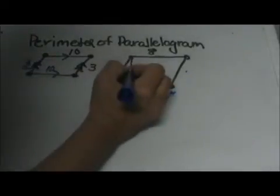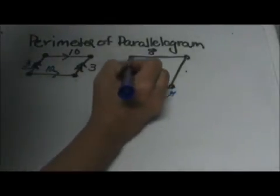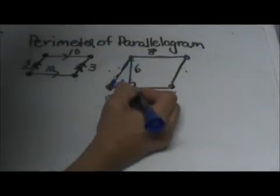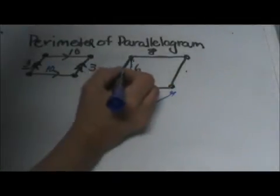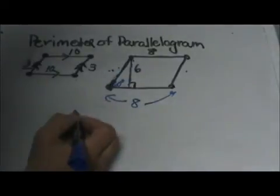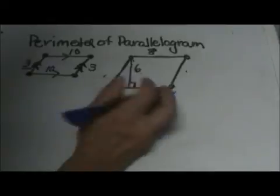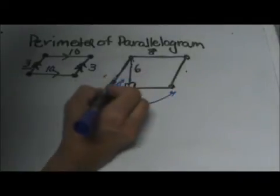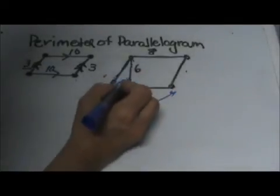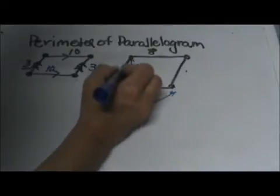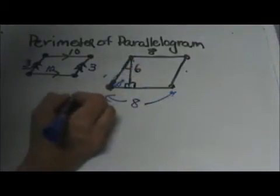Notice we have a right triangle here. We have this side is 6. We need this side over here which is actually the hypotenuse of a right triangle. We can use our 30-60-90 rules. Notice this is 60. This is a right angle because we have dropped an altitude down which forces this angle up here to be 30.